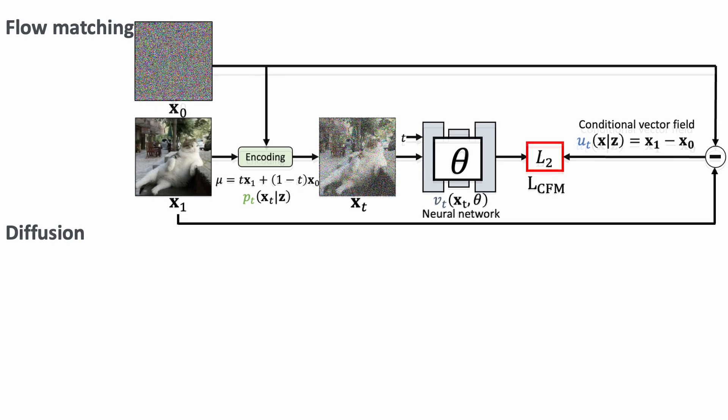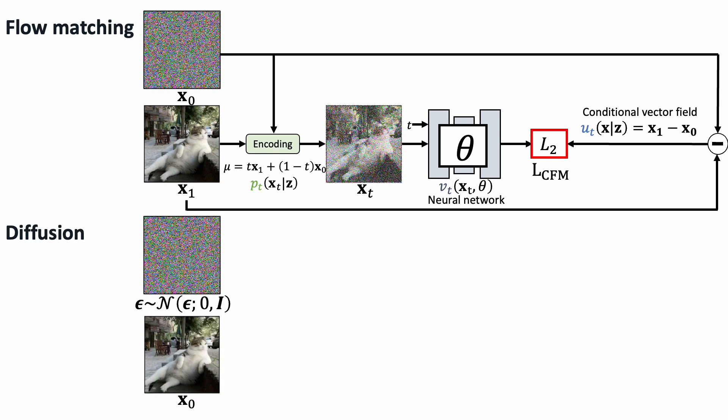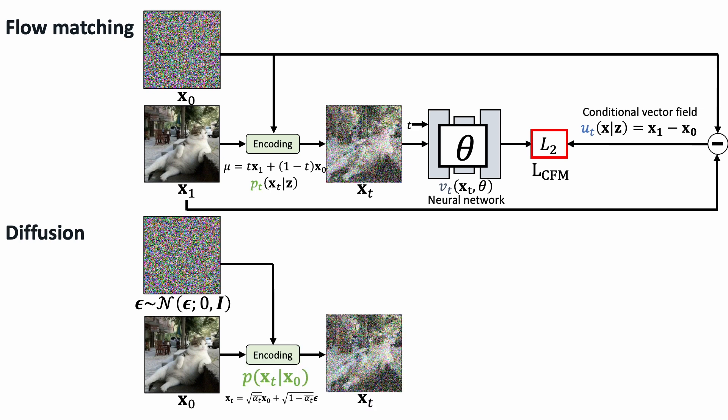It's useful to put things in perspective by comparing this with diffusion models. In training a diffusion model, we also sample a data point from the dataset, sample noise from a Gaussian distribution with zero means and unit variance. We encode the image using a forward diffusion process to get a noisy image. We can then train the neural network to predict the noise. By comparing these two, we can see how flow matching simplifies and generalizes diffusion models. In diffusion models, the conditional probability distribution comes from a fixed forward diffusion process.